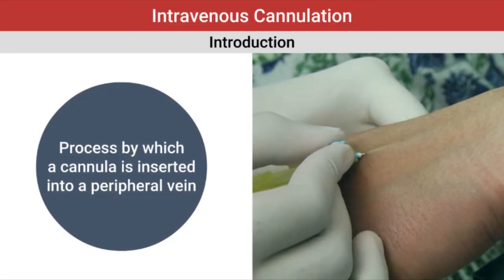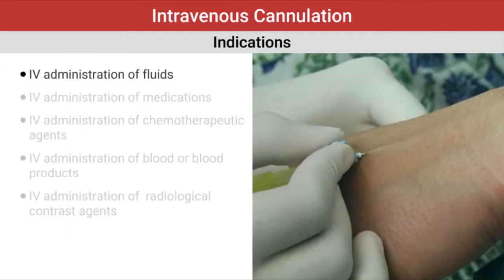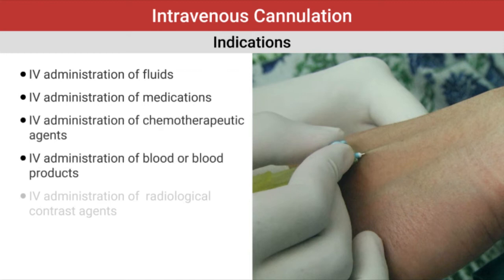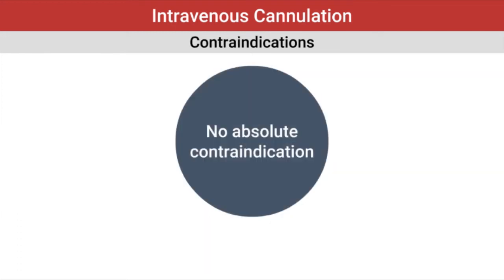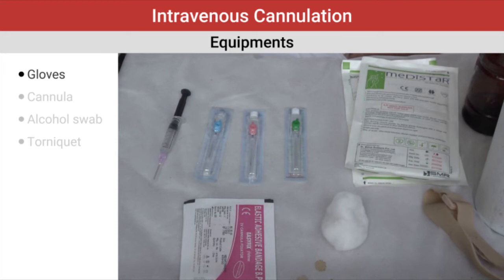Intravenous cannulation is a process by which a small cannula is inserted into a peripheral vein. Indications include a requirement for repeated blood sampling, IV administration of fluids, IV administration of medication including chemotherapeutic agents, IV administration of blood or blood products, and IV administration of radiological contrast agents. There are no absolute contraindications; however, any surface skin lesion or pathology would preclude that site for IV cannulation. All equipment must be kept ready: gloves, the IV cannula, an alcohol swab, and dressing to put over the cannula later.